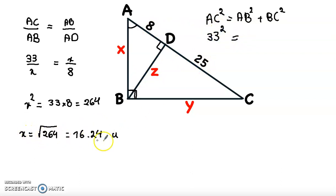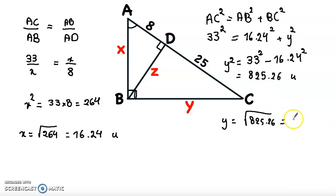equal AB squared, so 16.24 squared, plus BC squared, Y squared. Bring 16.24 squared to the other side. So Y squared equal to 33 squared minus 16.24 squared, equal 825.26 units. So Y equal to square root of 825.26, equal to 28.7 units.